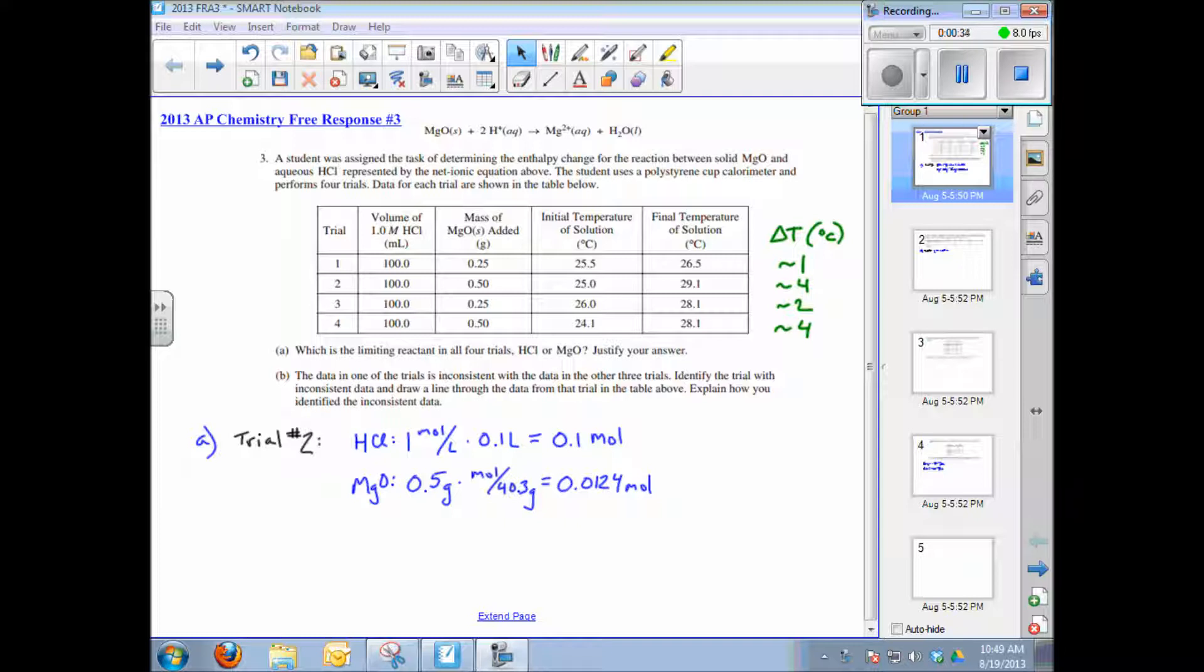First question, subpart A: What is the limiting reactant in all four trials, hydrochloric acid or magnesium oxide? There are two ways to do this. The first is the calculation method where we calculate the number of moles of hydrochloric acid. In all four trials, that number is the same: 100 mL of 1.0 molar hydrochloric acid.